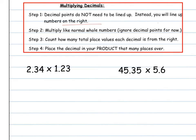For this first example, I'm going to do 2 and 34 hundredths times 1 and 23 hundredths. Those happen to line up by decimals, but this one over here does not. It's 45 and 35 hundredths, and the 6 and the 5 would line up like that. Lining them up on the right is the first step.